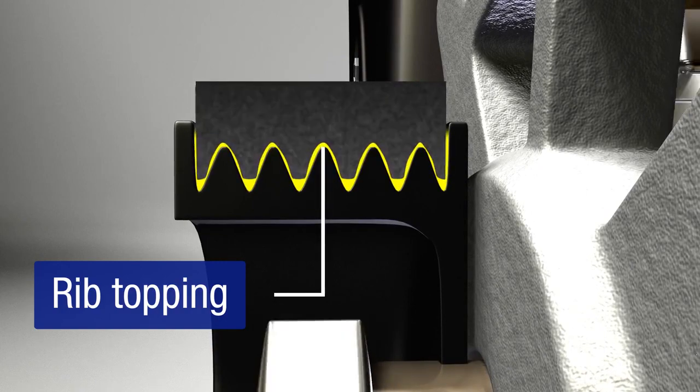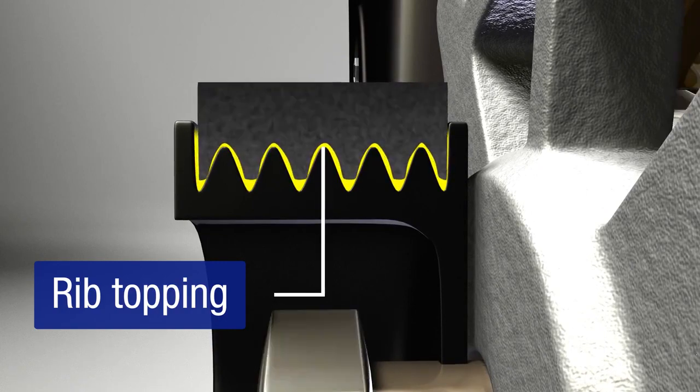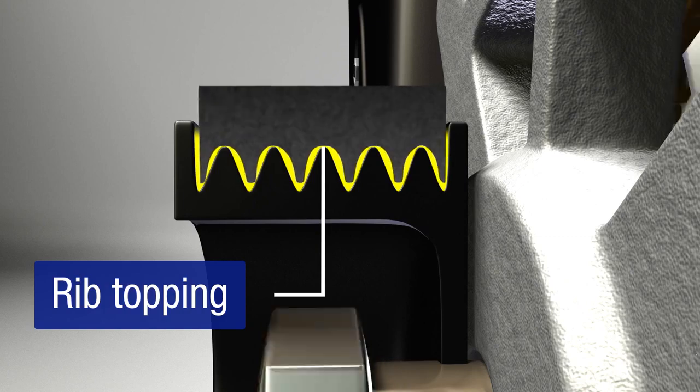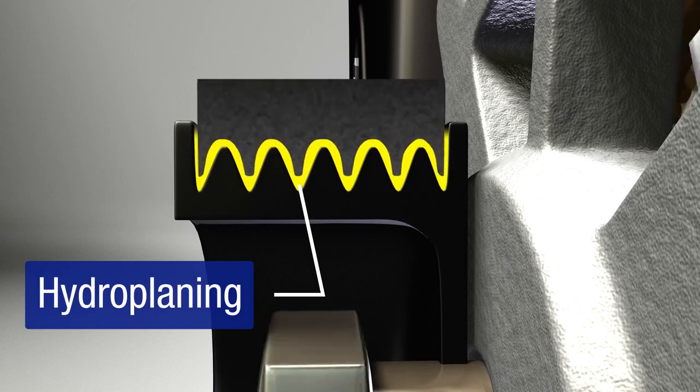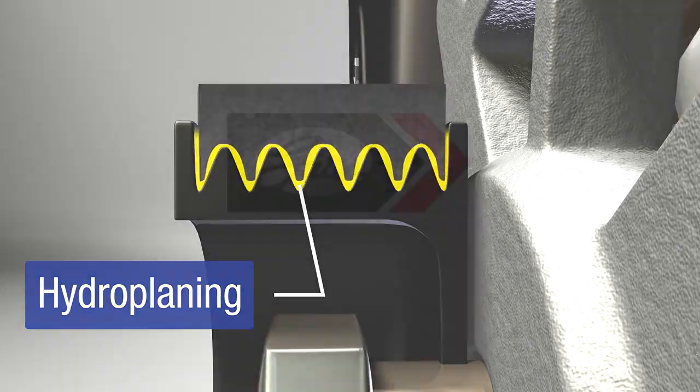The evacuation channel gets distorted from wear, which allows water to channel between the sides of the belt ribs and the sides of the pulley. With less contact between the belt and the pulley, the belt has a tendency to hydroplane and slip.